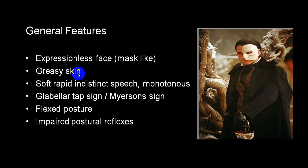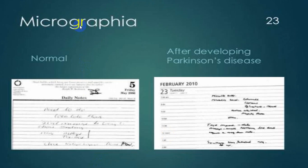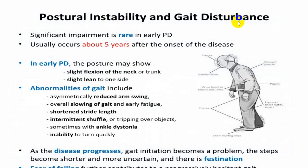Classical features include mask-like face, greasy skin, monotonous speech, positive glabellar tap (also called Meyerson's sign), flexed posture, and impaired postural reflexes. When asked to write, the person shows typical micrographia — letters are very small. Postural instability and gait disturbances are not very common in an early stage but become classical findings as the disease advances — usually starting about five years after disease onset.